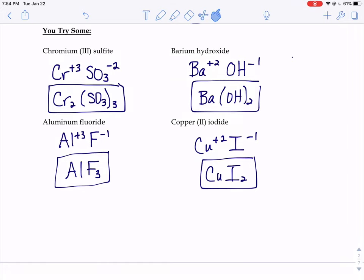Here's some answers to the 'you try some' problems. Chromium (III) sulfite - chromium Roman numeral 3. The Roman numeral tells you the charge, so it wants chromium with a positive 3 charge. Sulfite, anything that ends in -ate or -ite...